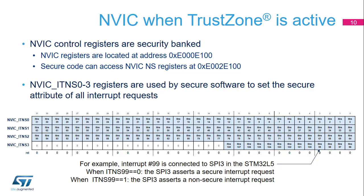When TrustZone is active, both secure and non-secure partitions will be executed by the Cortex-M33. The secure partition is in charge of assigning the secure attribute of all interrupt sources. When an interrupt source is programmed as secure, all its related control and status register fields are read as 0 and cannot be written by non-secure software. The secure partition can read and write register fields related to non-secure interrupts by using an offset of 0x20000 to access the non-secure register instances. For example, if the secure partition configures the SPI3 peripheral as non-secure, it has to write 1 to bit 3 of the NVIC_ITNS3 register. By default, all interrupt sources are considered to be secure.